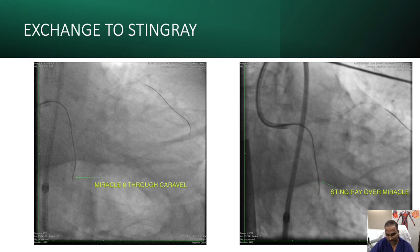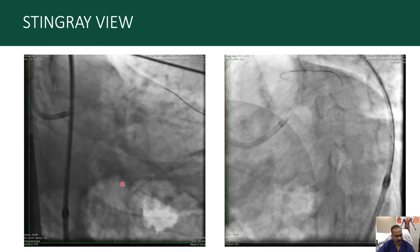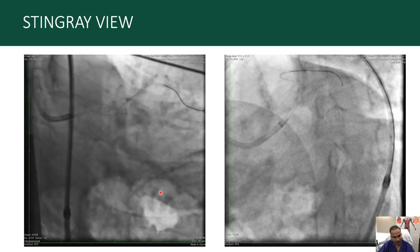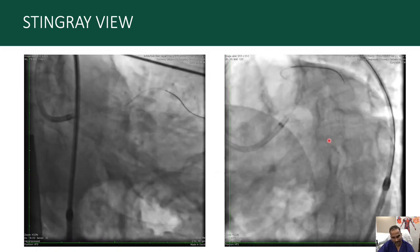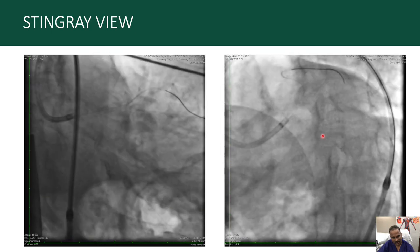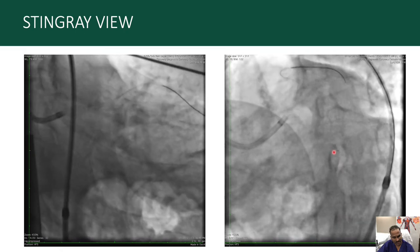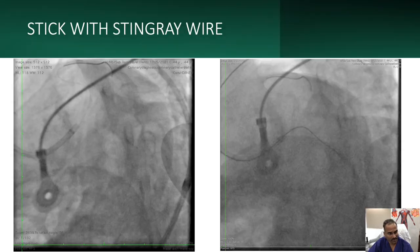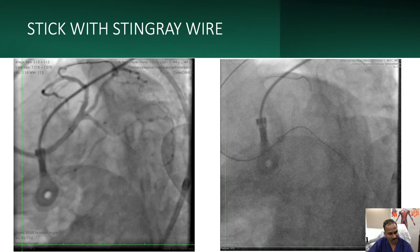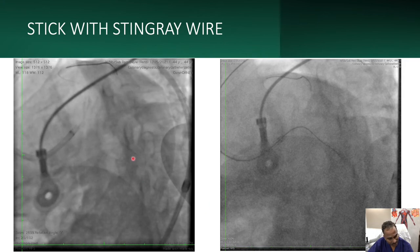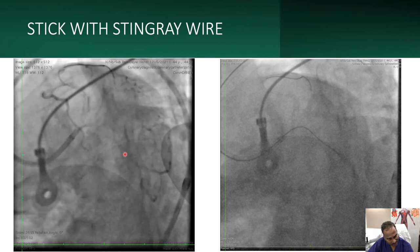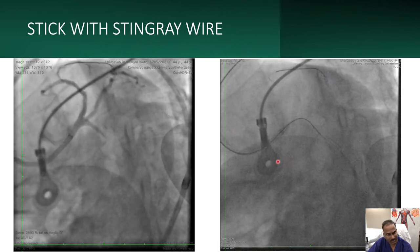With the Stingray in position, you can see the two bright spots — the markers. We inflate the Stingray balloon and you can see the two wings. However, this is not the ideal view for re-entry, so we rotate to the 90-degree view — from epic caudal to a low caudal view. In this view, the wings are not visible and a thin contrast stripe is seen — this is the side view of the Stingray, where the exit port faces the true lumen. We inject contrast to confirm: lumen is filling on this side, confirming the exit direction.